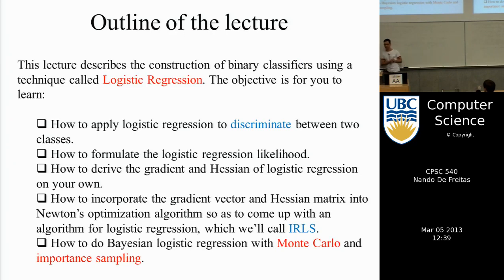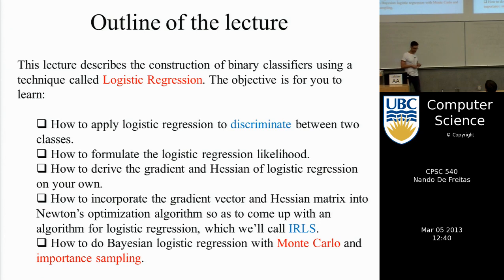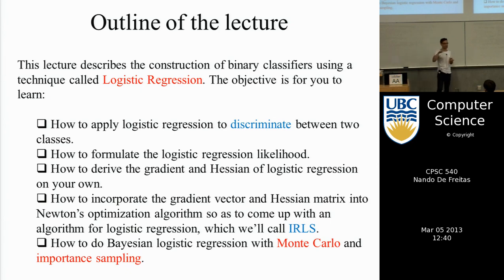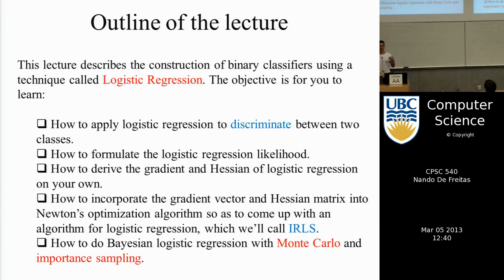In this class, the idea will be to understand what logistic regression is, make a connection of logistic regression to neural networks, derive the gradient and the Hessian for logistic regression, because once we have the gradient we know how to implement a learning algorithm. We'll be able to do stochastic gradient descent, and once we have the Hessian we can implement Newton's method. I will show you code for doing this using Newton's method.